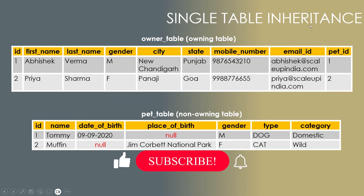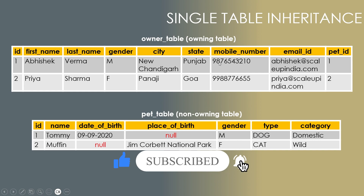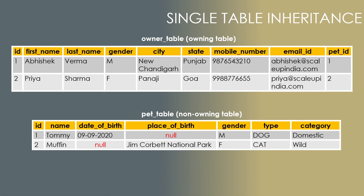In the last video we discussed single table inheritance. There was an owner table and a pet table. The advantage was having only a single table, but the disadvantage was too many null values. If we have four to five different child classes with multiple different variables each, the table size becomes very large and has too many null values, which is not a good practice. Also, you need an extra 'category' column just to differentiate between different child classes.